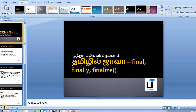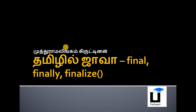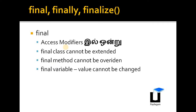Now, in the discussion, we are going to check out the final keyword. The final keyword is a non-access modifier — similar to public, private, protected, default, abstract, and static. These are access modifiers, and they are related to encapsulation. The final keyword is used in a class, method, and variable.